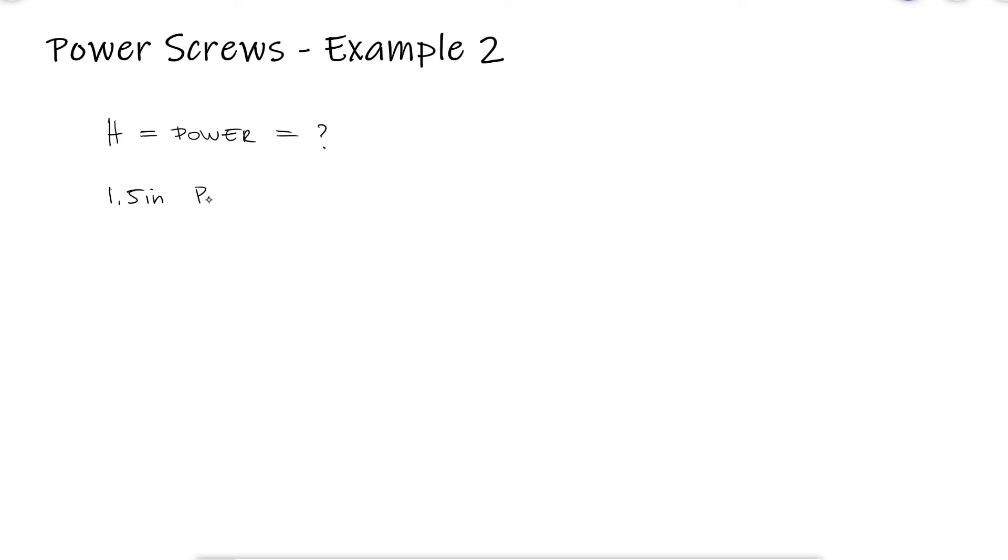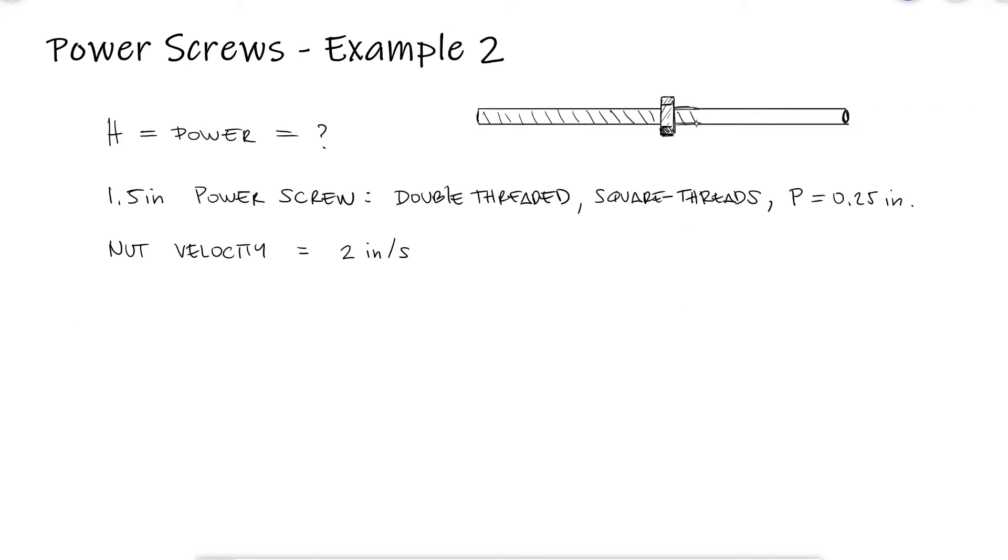What is the power required to drive a 1.5 inch power screw that has double squared threads with a pitch of a quarter of an inch? The nut is supposed to move at a velocity of 2 inches per second while pushing at 2.2 kips load.